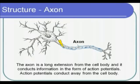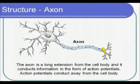The axon is a long extension from the cell body and it conducts information in the form of the neural impulse or action potential. The direction of the neural impulse is away from the cell body, down the axon. It is electrical in nature.